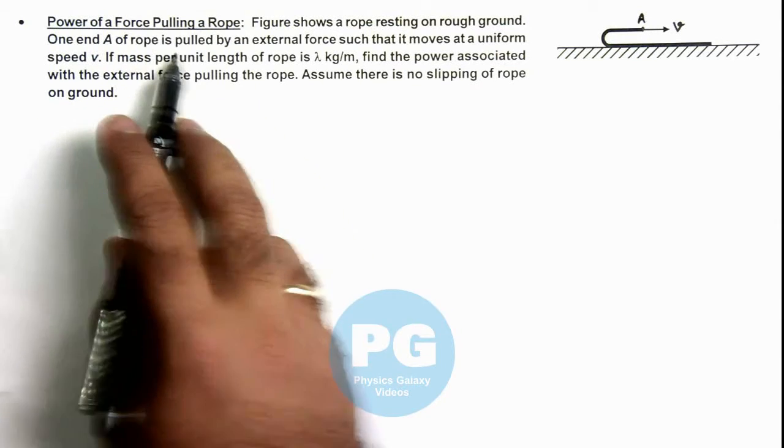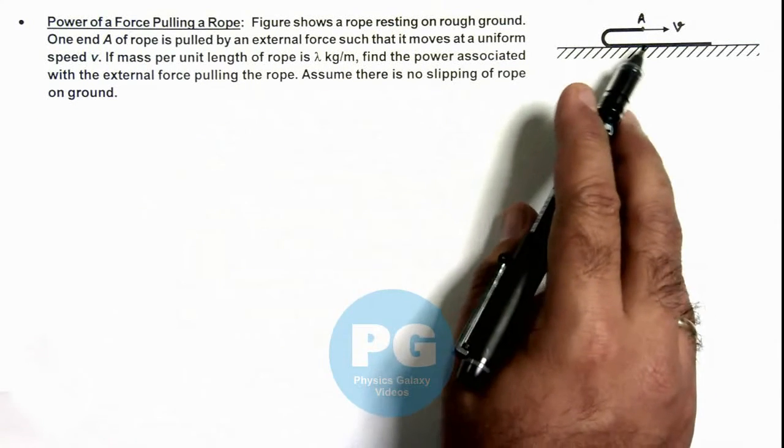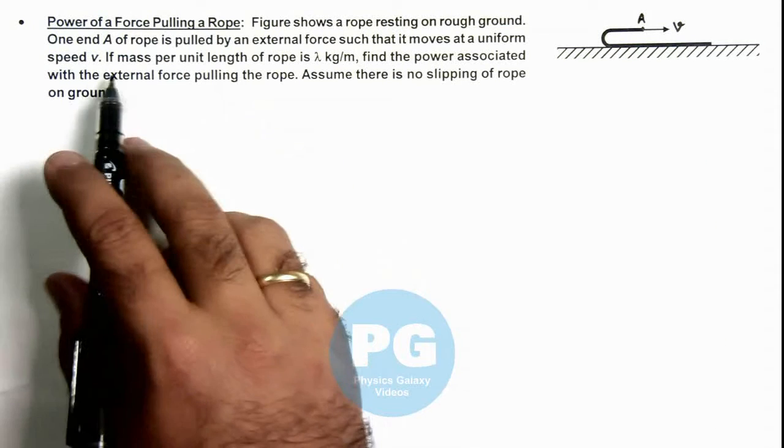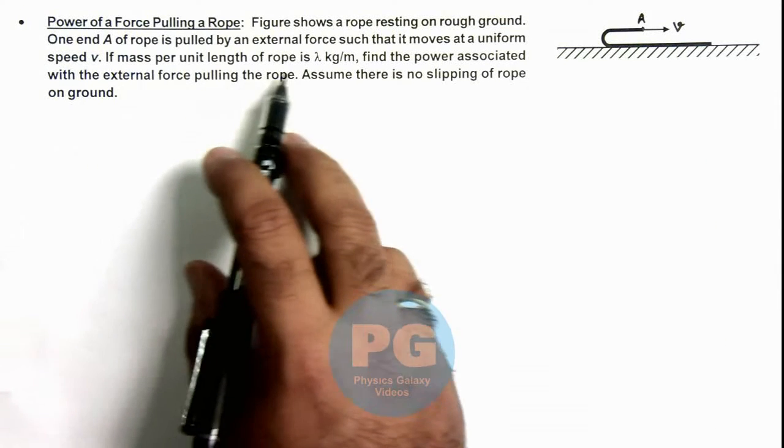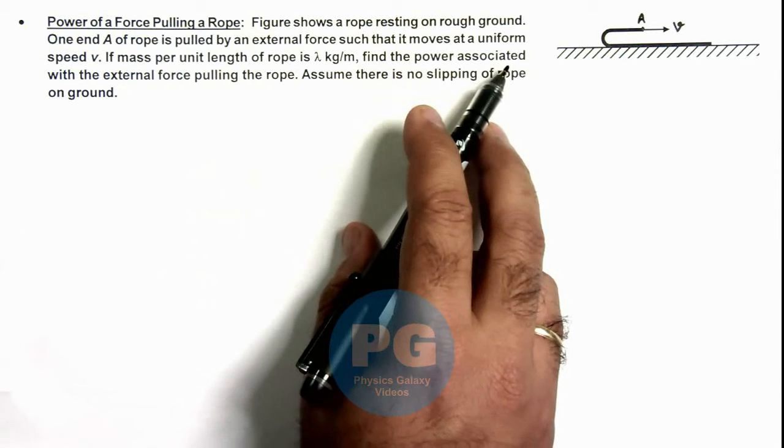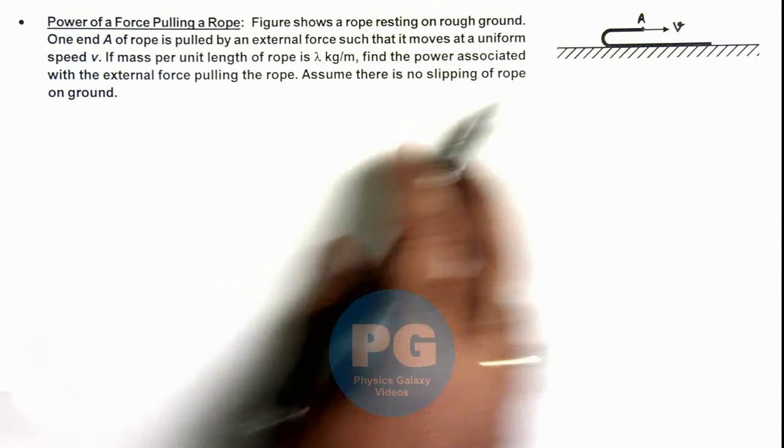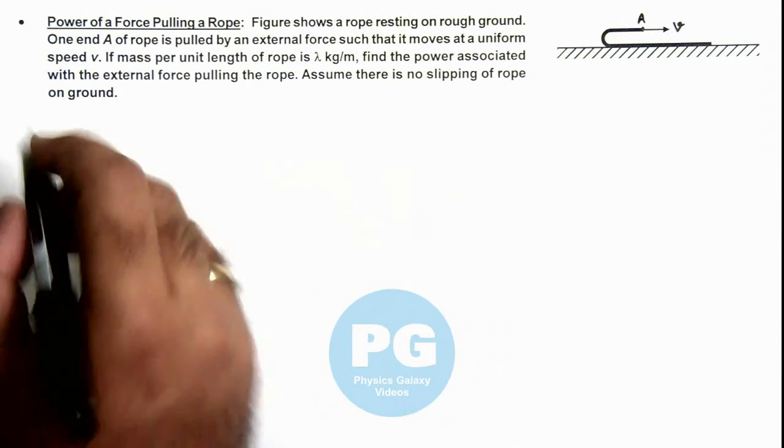One end A of the rope is pulled by an external force such that it moves at a uniform speed v. If mass per unit length of the rope is λ kg/m, we are required to find the power associated with the external force pulling the rope, assuming there is no slipping of rope on ground.